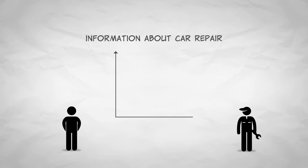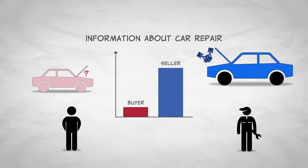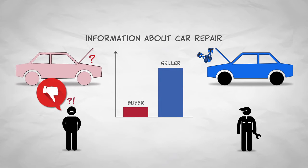But things get more complicated if you're dealing with something like repairing your car. The mechanic says you need a Johnson rod. Do you? Do you even know what a Johnson rod is? The mechanic knows a lot more about car repair than you do, and that makes it hard to know whether the mechanic is correct or even telling the truth. You might end up paying a lot of money for car repairs you don't really need. This is another example of asymmetric information, where one party to an exchange has more or better information than the other party has.